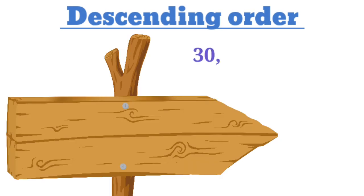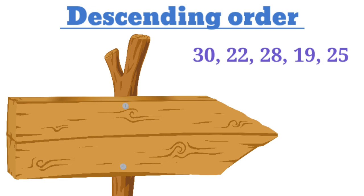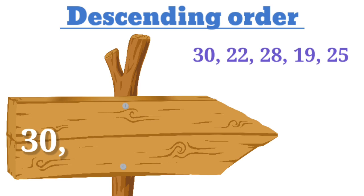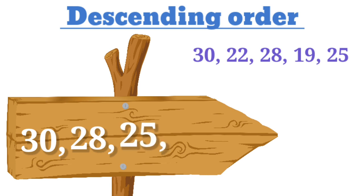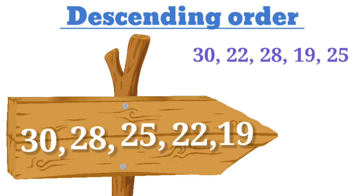Now let's arrange the numbers in descending order. We have 30, 22, 28, 19, 25. Which is the smallest number? Yes, number 19 is the smallest number. And which is the greatest number? That's right, number 30 is the greatest number. In descending order we start with the greatest number and end with the smallest. So 30 will come first, then 28, next 25, followed by 22, and lastly it ends with the smallest number, that is 19.